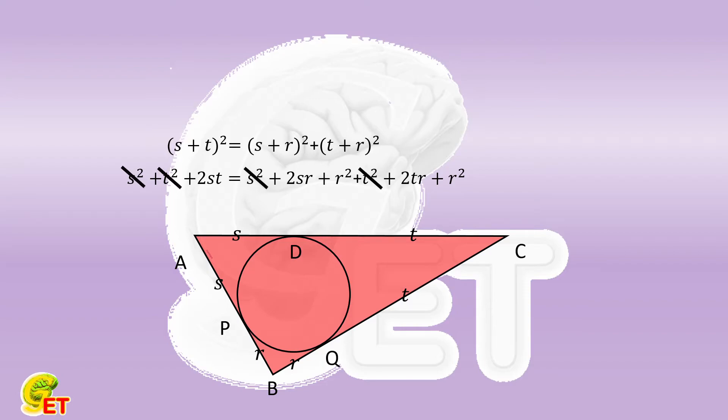We remove the common terms on both sides. So as to obtain, 2st = 2r(s + t) + 2r².